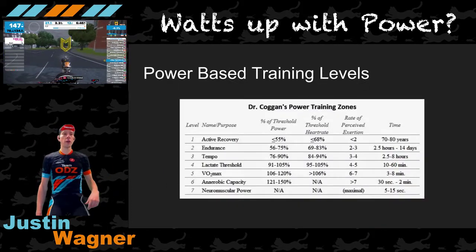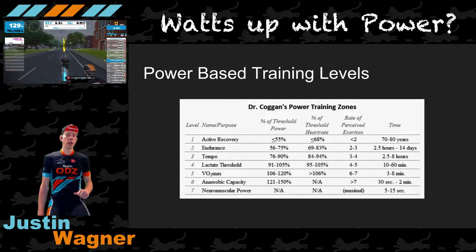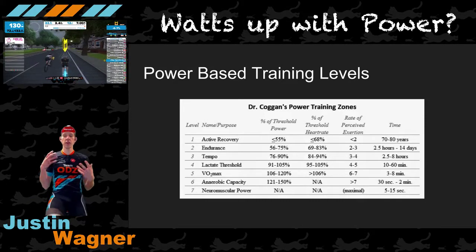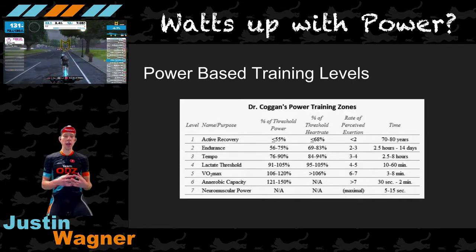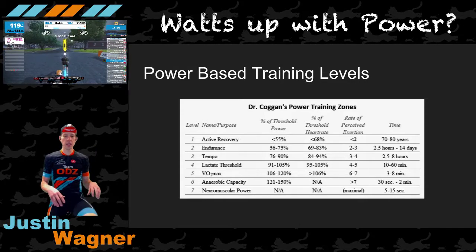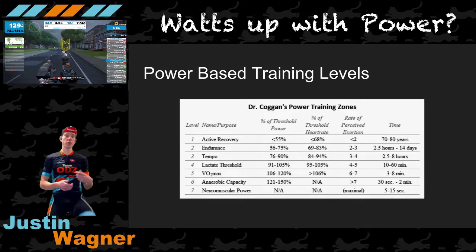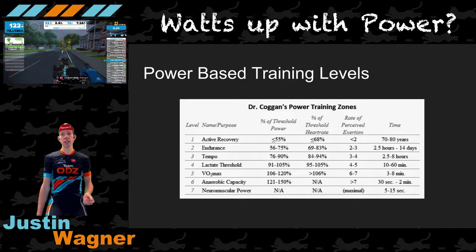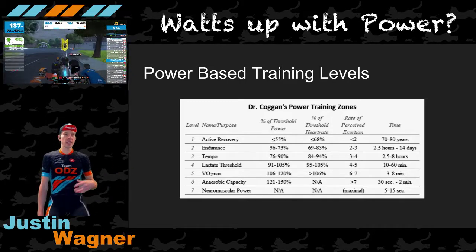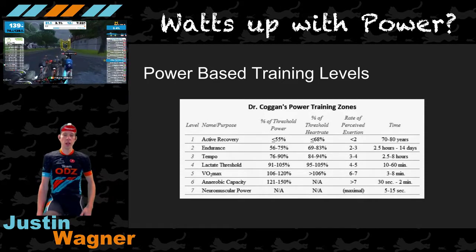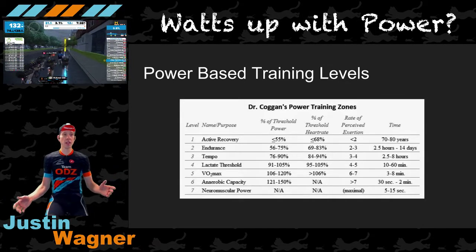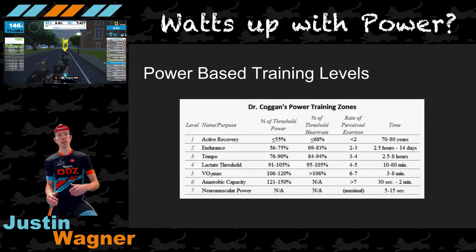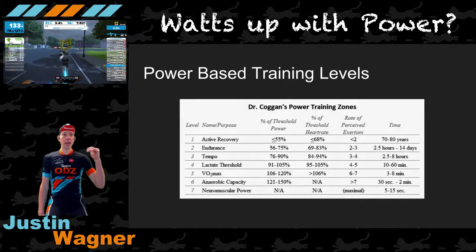You've probably heard a little bit about the different training levels or power-based training levels. These are essentially seven different ranges of power. These ranges are defined in terms of percentage of your FTP and they describe different power levels. When you work in these different zones, it's going to stress different parts of your body and cause different physiological gains based on training in those zones. Active recovery is essentially at about 55% of your FTP or lower. Next step up is endurance, 55% to 75%. Then tempo, 76% to 90%. Lactate threshold, 91% to 105%.